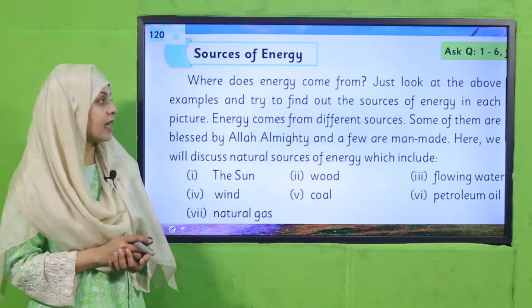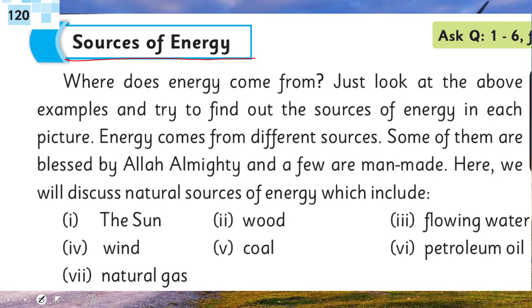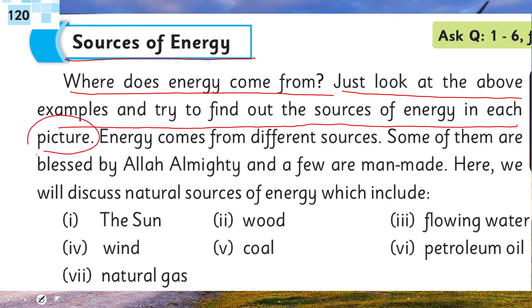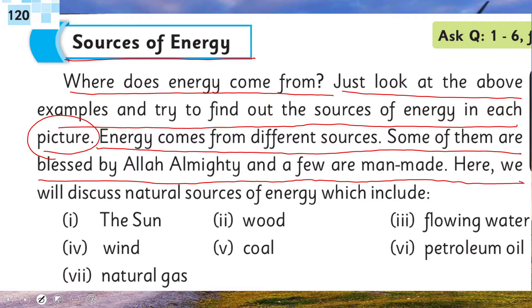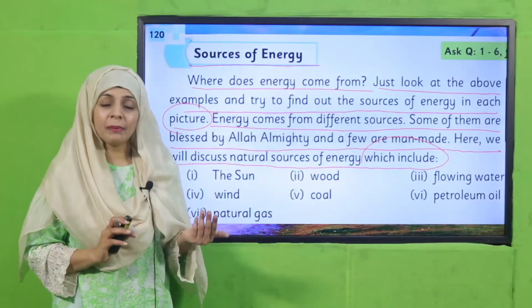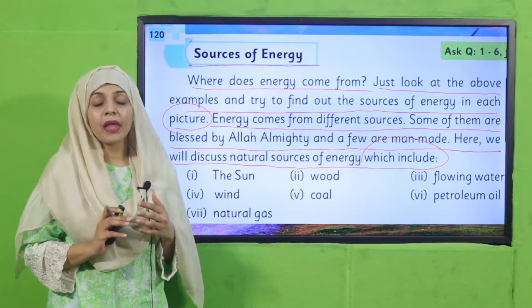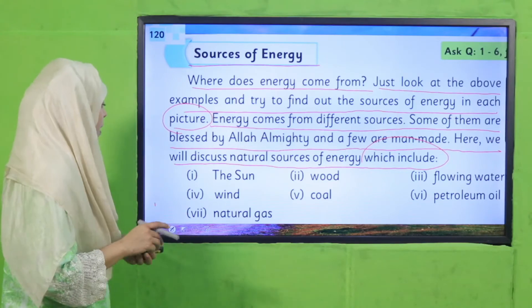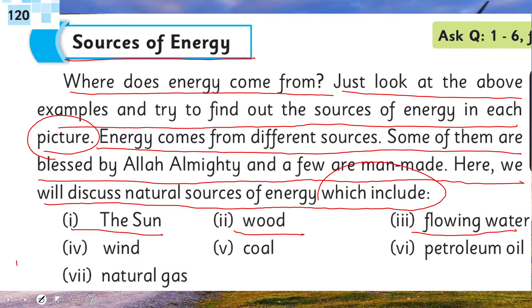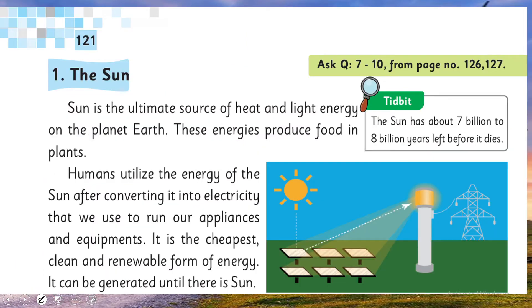Now is the time for reading. Quickly open page number 120 in your GK3 books. Sources of energy: where does energy come from? Energy comes from different sources. Some of them are blessed by Allah Almighty and a few are man-made. Here we will discuss natural sources of energy, which include the sun, wood, flowing water, wind, coal, petroleum oil, and natural gas. These are all natural sources of energy.